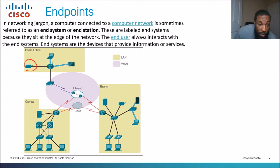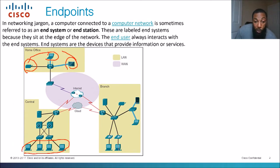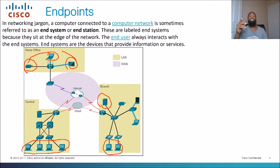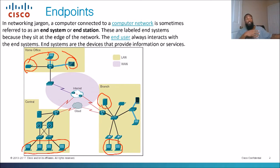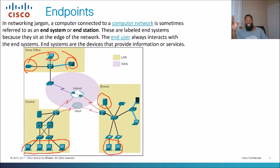We've got this printer, this laptop, this tablet, these desktop PCs — they all sit at the edge of the network. That's why they call them endpoints. These two desktop PCs and this server would be considered endpoints — they are labeled end systems because they sit at the edge of the network. The end user always interacts with these end systems. Coworkers, the people that are actually using these devices, will be considered end users, and the devices they use — the computers, laptops, cell phones — will be considered the end devices.